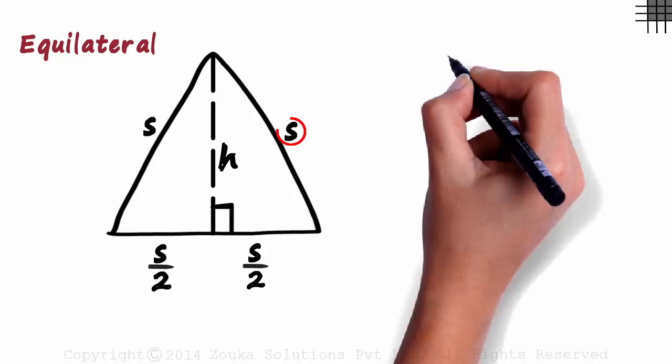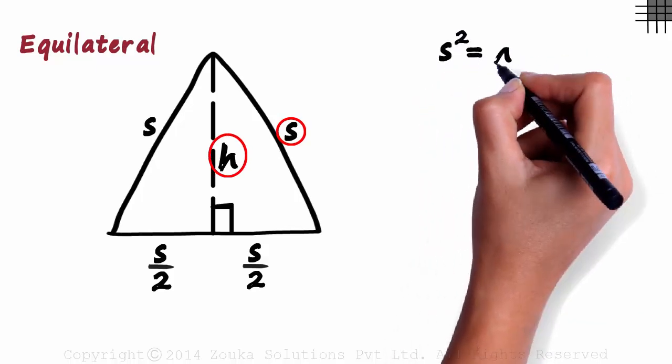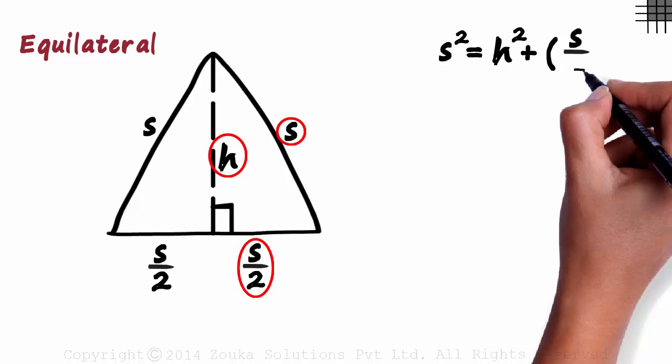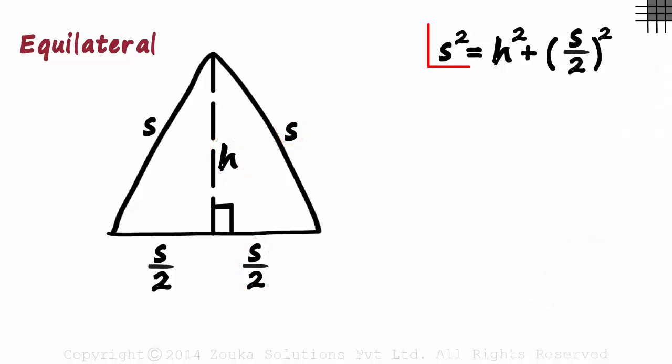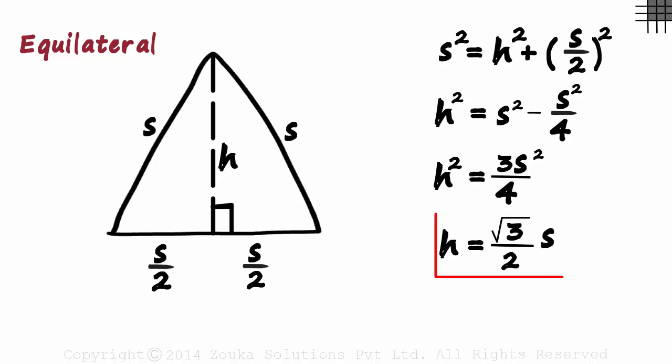We can say that s squared is equal to h squared plus s by 2 squared. The square of the hypotenuse is equal to the sum of the squares of the other two sides. Solving this, we get h as root 3 by 2 times s. Now we have h in terms of s.